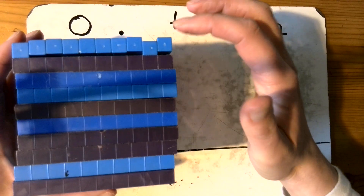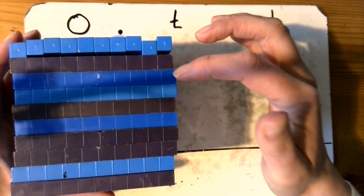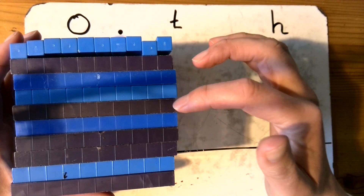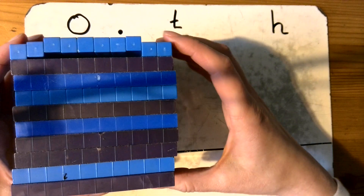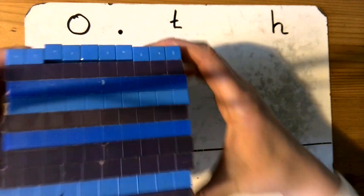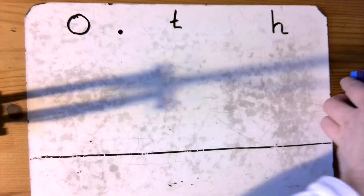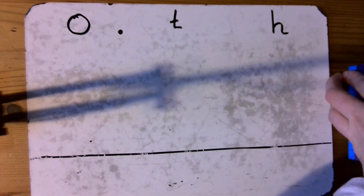So I've got one, two, three, four, five, six, seven, eight, nine, ten. I've got my whole split into ten equal parts.